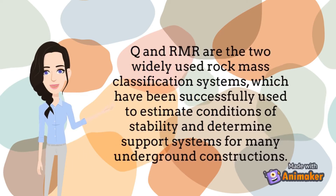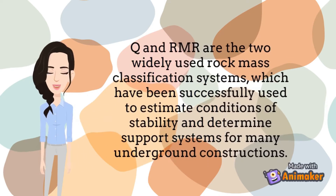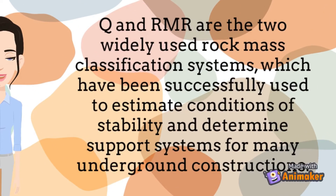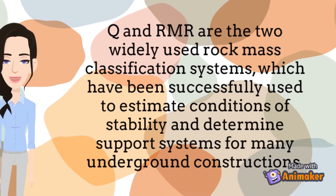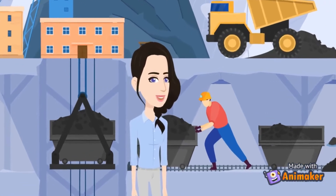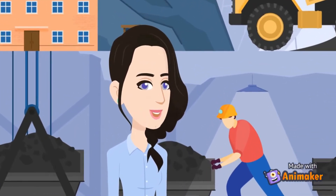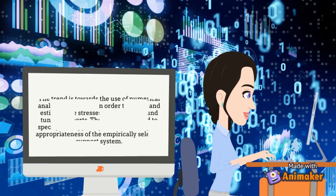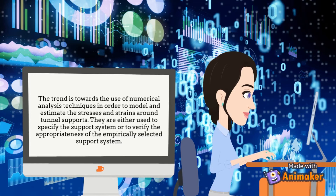Q and RMR are the two widely used rock mass classification systems, which have been successfully used to estimate conditions of stability and determine support systems for many underground constructions. In mining, such empirical methods have usually been used. In order to confirm the empirical results and the decisions taken, a reliable estimate of the strength and deformation characteristics of rock masses requires a numerical approach. The trend is towards the use of numerical analysis techniques to model and estimate the stresses and strains around tunnel supports. They are either used to specify the support system or to verify the appropriateness of the empirically selected support system.